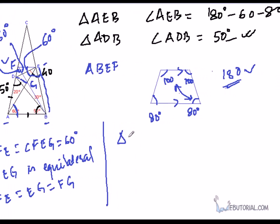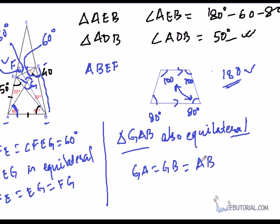What we have found is that angle GFE equals angle FEG equals 60 degrees. This means that triangle FEG is equilateral. This means that FE will be same as EG will be same as FG. Now take a look in triangle GAB. Since this angle is 60, this will also be 60. This angle is 60. Therefore, this is also equilateral.